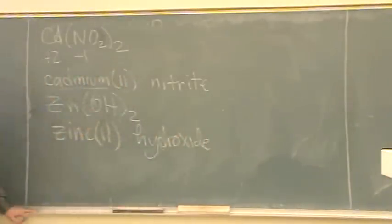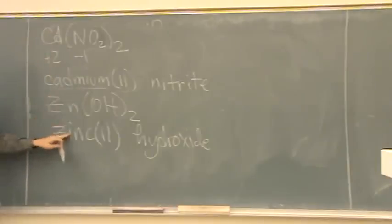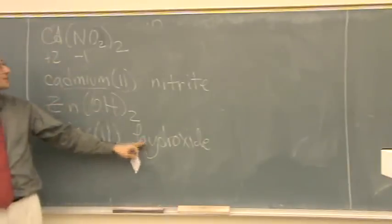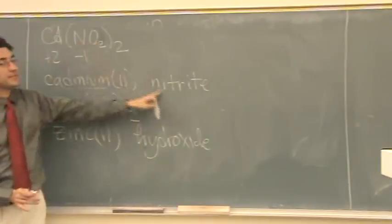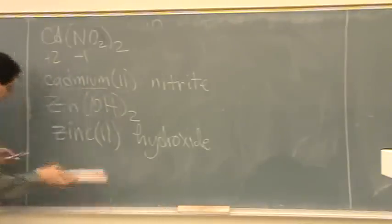So notice, I think you were asking before, like getting confused with this, if it's a polyatomic in the back, their names are both as is. There's no changes at all. So, cadmium, zinc. And this is hydroxide, nitrite. Those are not going to change at all. Let's try another one.